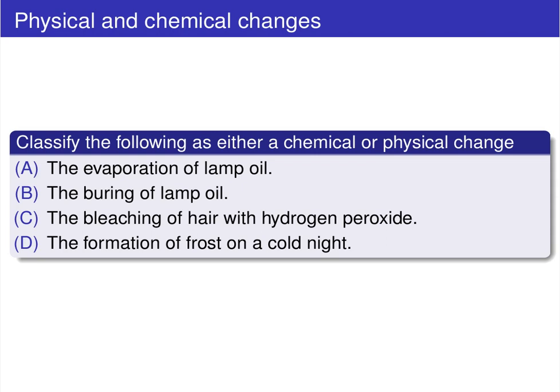Let's consider a practice problem. Given a handful of processes, classify each one as either a chemical or a physical change. First: the evaporation of lamp oil. The key word here is evaporation — we're not burning the lamp oil, it's simply moving into the gas phase. Lamp oil in the liquid phase moving into the gas phase has not been burnt; there's no chemical alteration. Therefore, evaporation is a physical change.